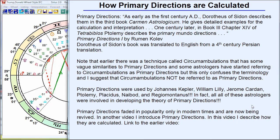Along come computers and people like Rumen Kolov. I have a quote here from his book at the top — you can pause the video and read it if you want. Rumen Kolov was the main person who figured out how primary directions are calculated, and he wrote a series of three short books on how those calculations are done.